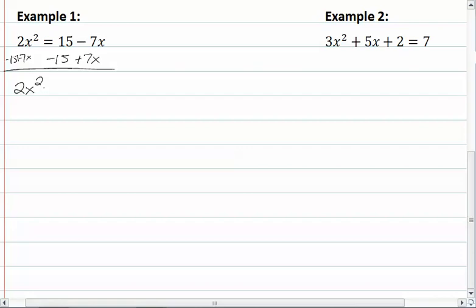So we have 2x squared plus 7x minus 15 equal to zero. And now we put it in the quadratic formula, which means we now have x equal to plus or minus...